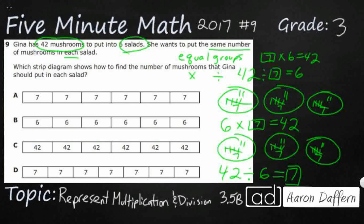Each of these boxes is going to represent one of our bowls. I'm going to go ahead and knock off D, because if you take a look at it, you've got 1, 2, 3, 4, 5, 6 — you've got 7 groups of 7. So that's 7 times 7 equals 49. Then C has got 6 groups, but it is 6 times 42, which equals 252. We don't have that many mushrooms — we've only got 42.